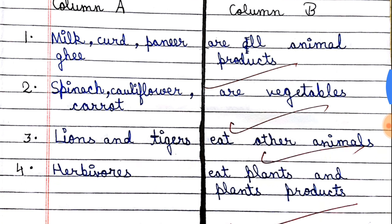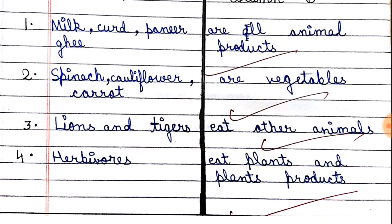Next is spinach, cauliflower and carrot. These are all vegetables, which is why they match with vegetables.